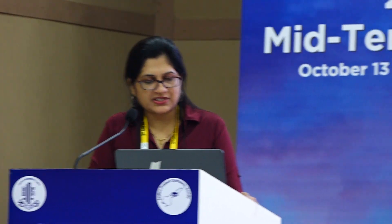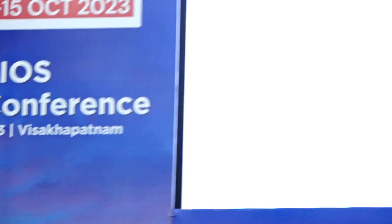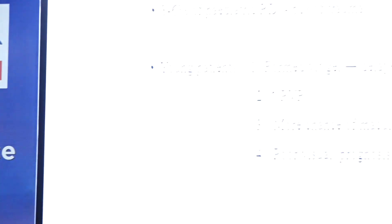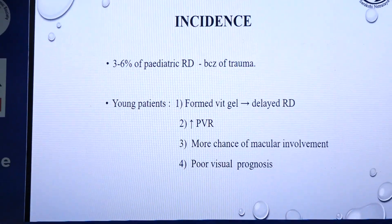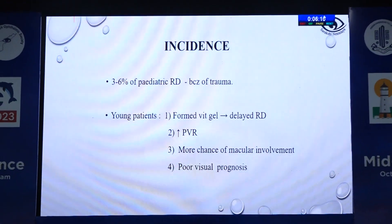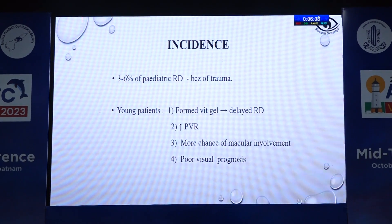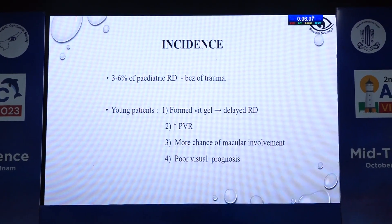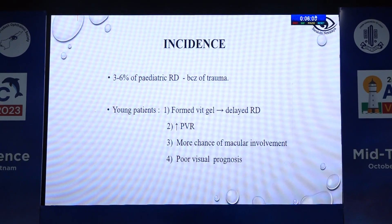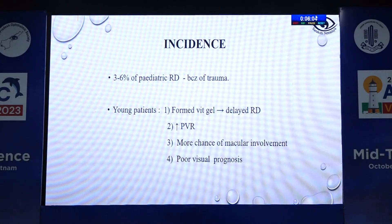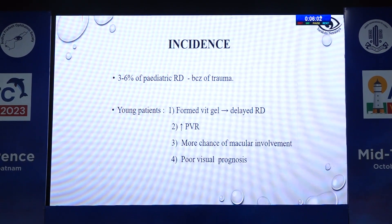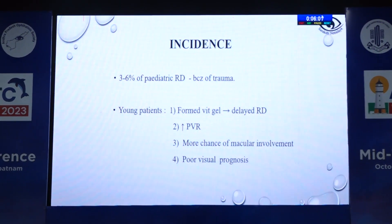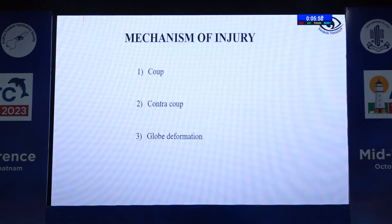In pediatric cases, trauma accounts for 3 to 6 percent of retinal detachments. The cause is that due to formed vitreous jelly there is delayed retinal detachment in young patients, with increased chances of PVR, more chances of macular involvement, and therefore poor visual prognosis.